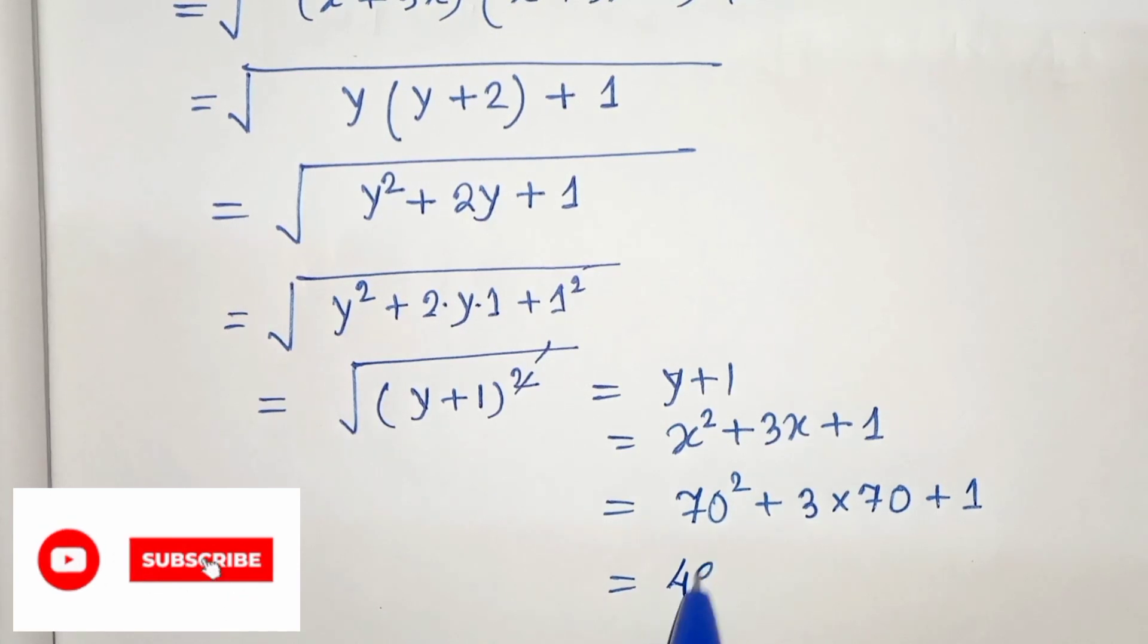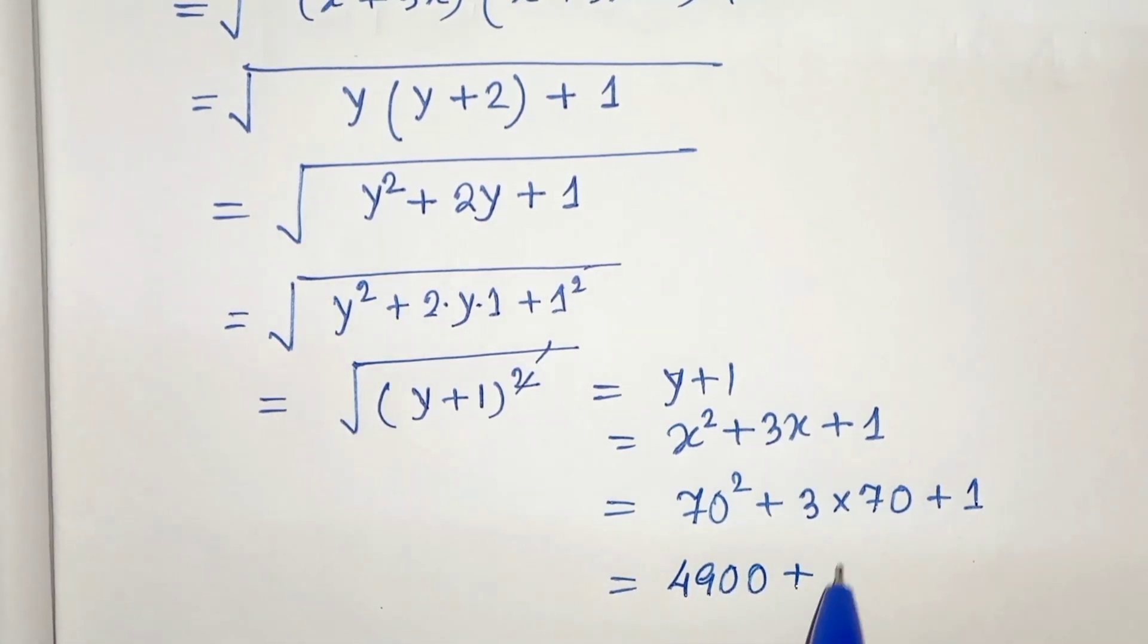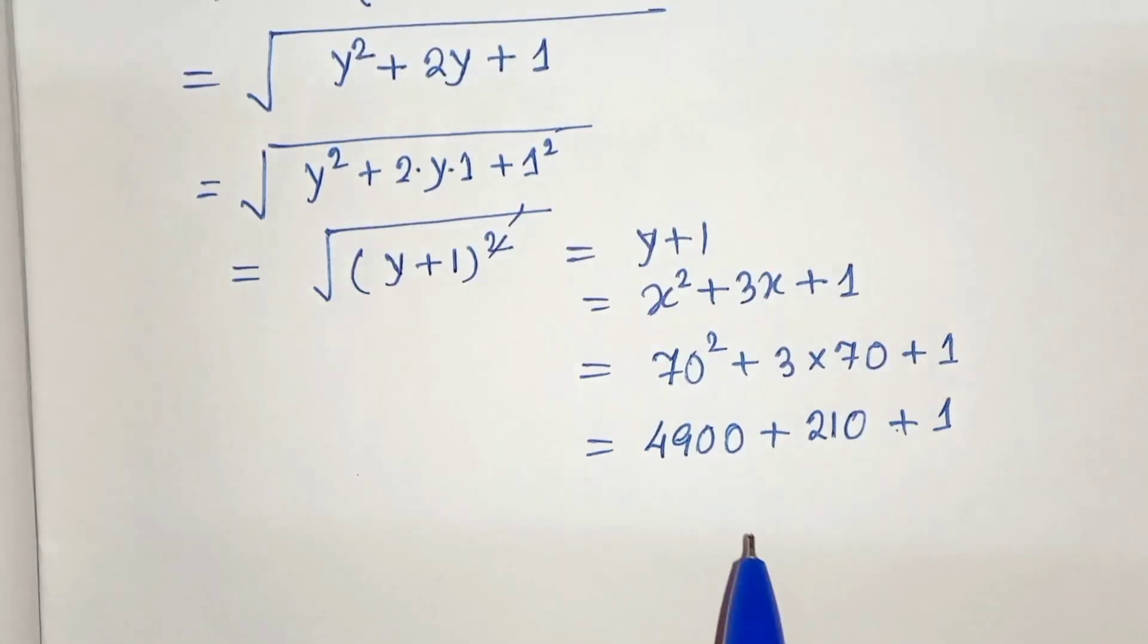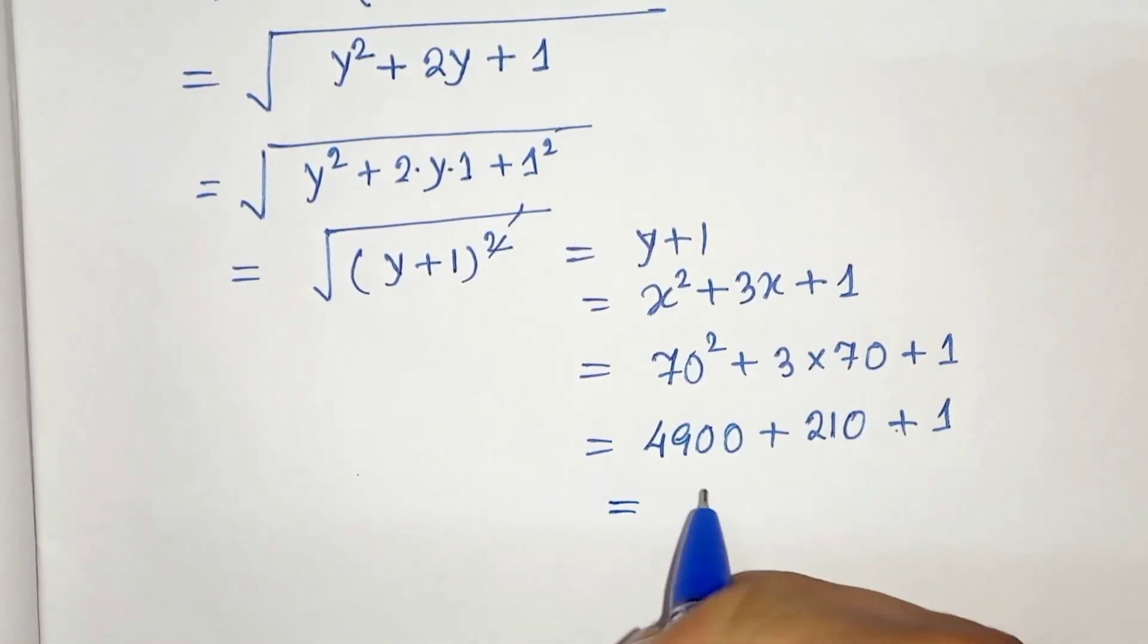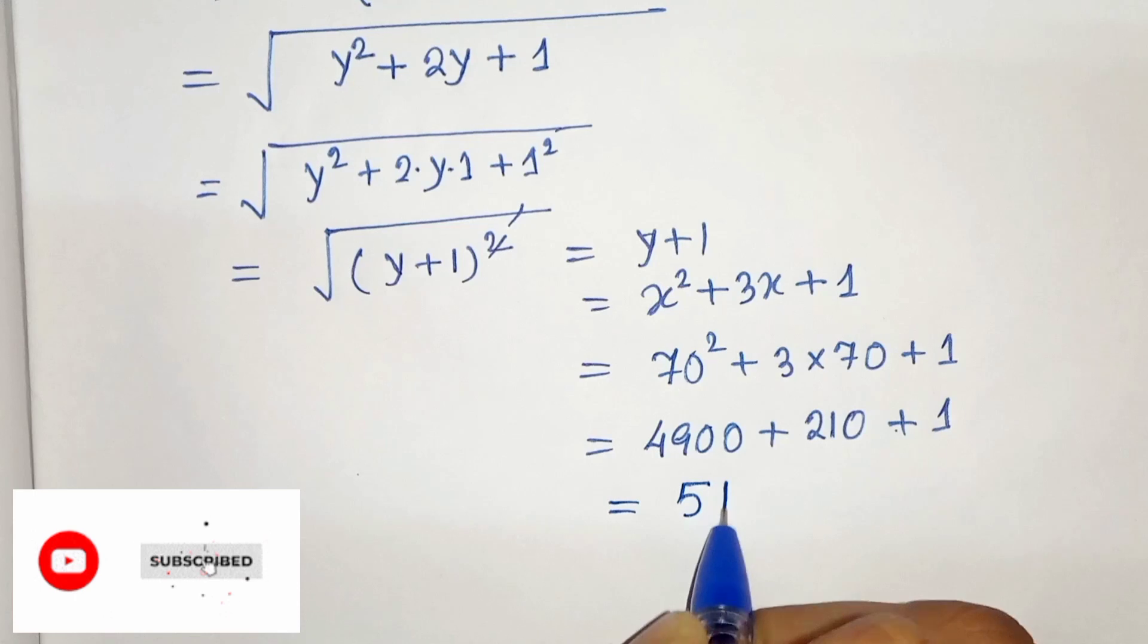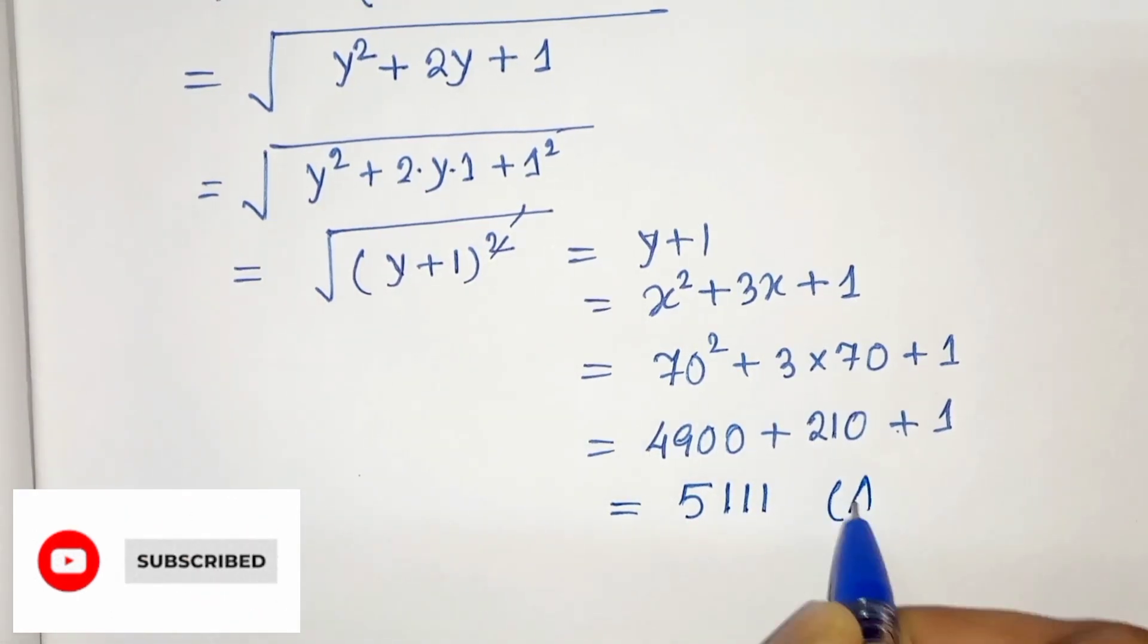70 squared is 4900 plus 3 times 70 is 210 plus 1. And if we take the sum, we will get 5111. This is our solution.